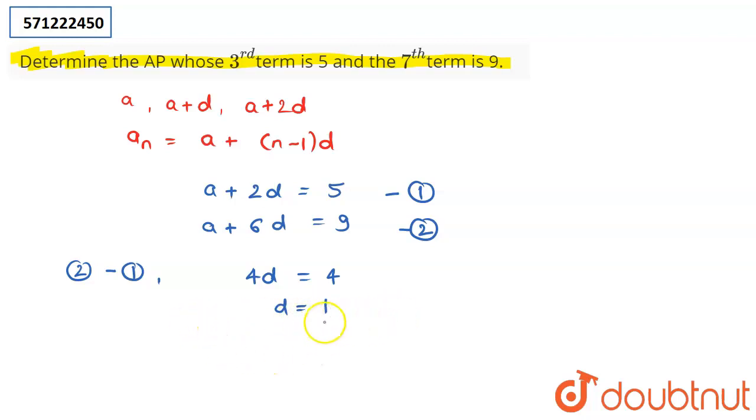Now that you have the value of d, substitute it in the first equation. It becomes a+2 equals 5. From here you can say that a equals 3.